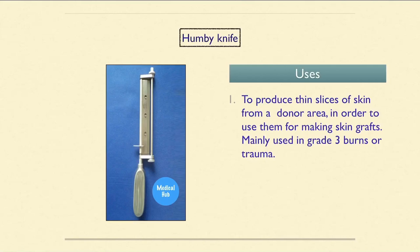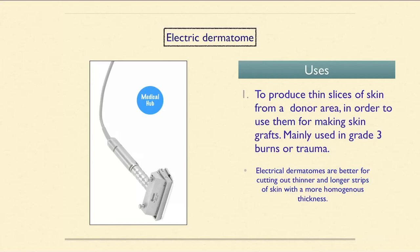The Humby knife is used to produce thin slices of skin from a donor area to make skin grafts, mainly used in grade 3 burns or trauma. The electric dermatome is also used to produce thin slices of skin for skin grafts; electric dermatomes are better for cutting thinner and longer strips of skin with more homogeneous thickness.